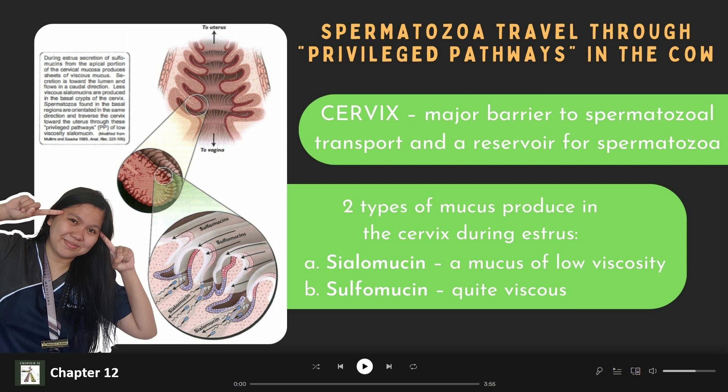The production of these two types of mucus creates two distinct environments within the cervix. When spermatozoa encounter the viscous sulfomucin, they are washed out of the tract. On the other hand, those that encounter the low-viscosity sialomucin are able to swim into it. Thus, the low-viscosity environment of the deeper cervical crypts creates privileged pathways through which spermatozoa can move. The ability of spermatozoa to traverse these privileged pathways depends on their ability to swim through the basal channels or crypts of the cervix. In this context, the cervix acts as a filter that eliminates non-motile spermatozoa.